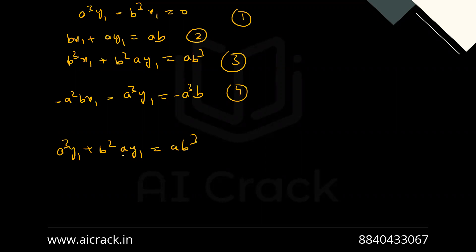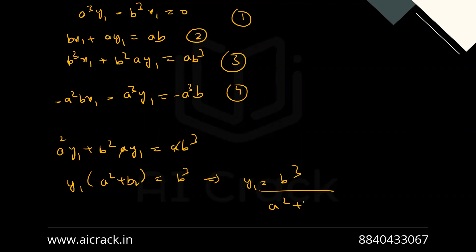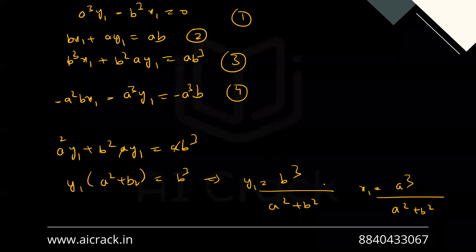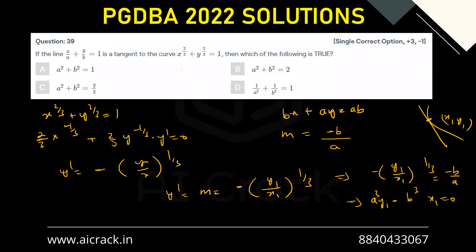After canceling a, we get y1·(a² + b²) = b³, so y1 = b³/(a² + b²). Similarly, adding the fourth and first equations gives x1 = a³/(a² + b²). Now we have the values of x1 and y1 — basically the point of tangency — and we can plug this point into the curve equation.